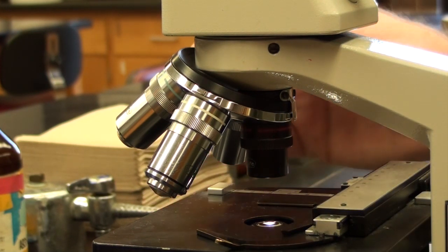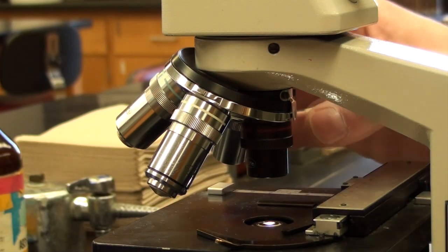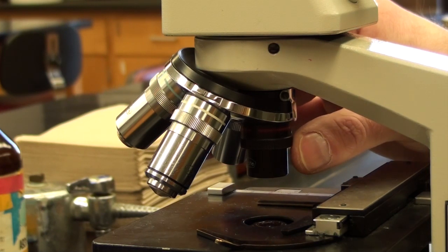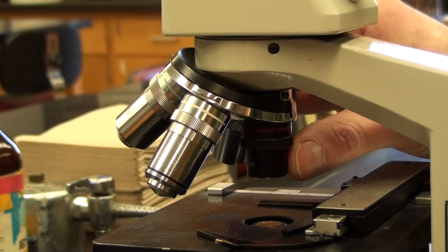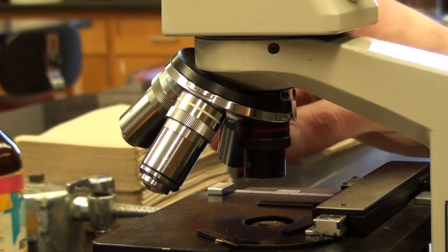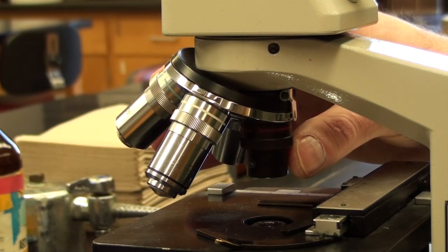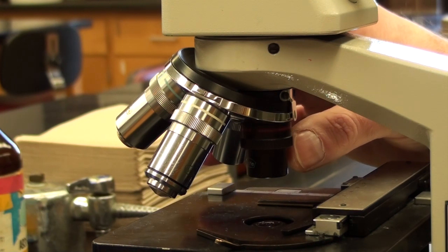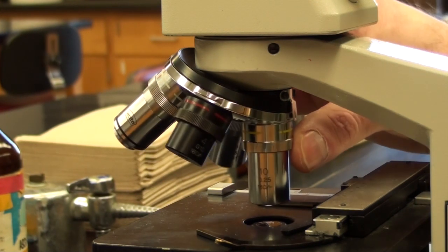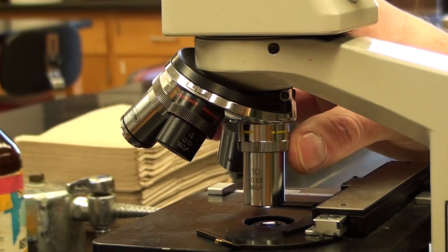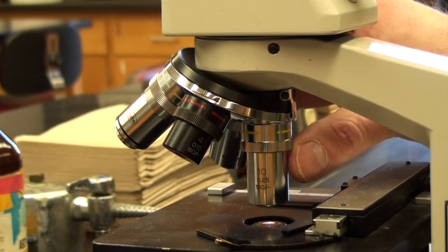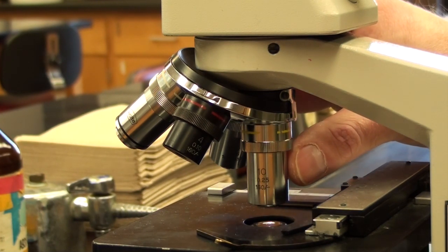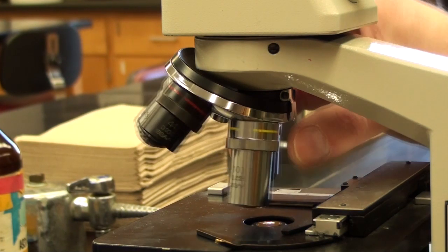This might be a good position to see what the iris does. Typically, one of the problems students have is under low objective, it's a very big lens, so we don't need as much light. We can dial the iris down to decrease the amount of light. As we move up in magnification, we'll want to increase how much light is coming through the iris, because the lens itself is smaller in diameter and can't capture as much light.